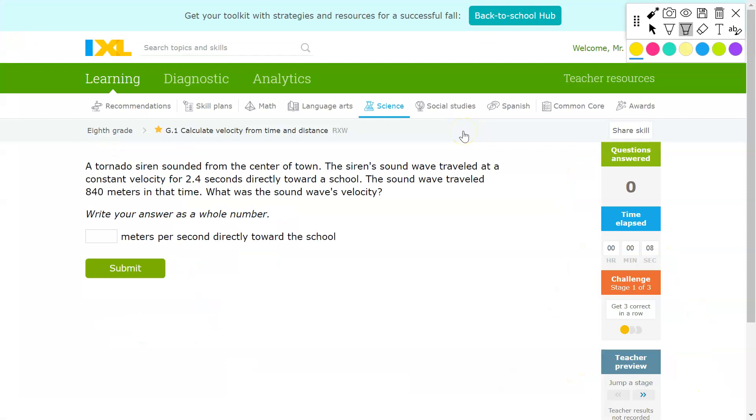Now on to some practice problems. For G.1 specifically, the only thing we're doing is calculating velocity. As we mentioned earlier, velocity and speed mathematically solve out the same. So speed or velocity is equal to D over T, distance over time. In this question, we have two units: 2.4 seconds and 840 meters.